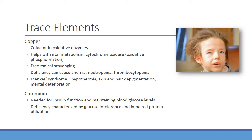You can also see Menkes syndrome, which is more of a congenital genetic deficiency. You'll find these genetic and metabolic issues especially in pediatric patients. With Menkes syndrome, you can have hypothermia, skin and hair depigmentation — as shown in the picture of a young child with very light pigmentation — and significant mental deterioration.